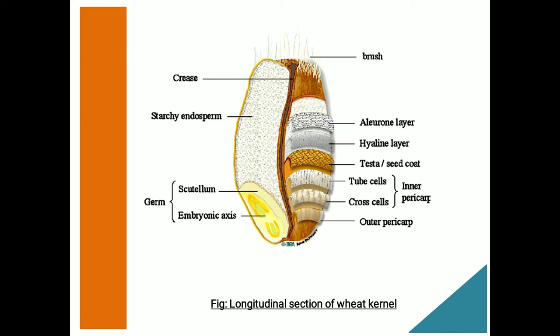Wheat kernels vary widely in texture and color. The variation in texture is related to the binding force in the endosperm, and the color is usually related to the pigment in the seed coat. The type and presence of the pigment is under genetic control, and this can be manipulated by plant breeders to give a desired color to the wheat kernels.